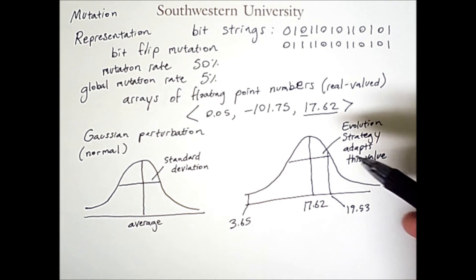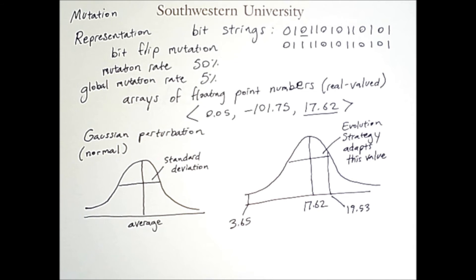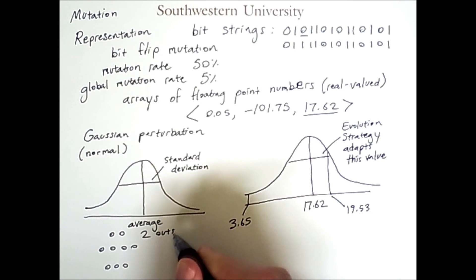Simply using Gaussian perturbation, many complex structures can be evolved. For example, let's say I want to evolve a neural network with the following topology: two outputs, four hidden neurons, and three inputs.